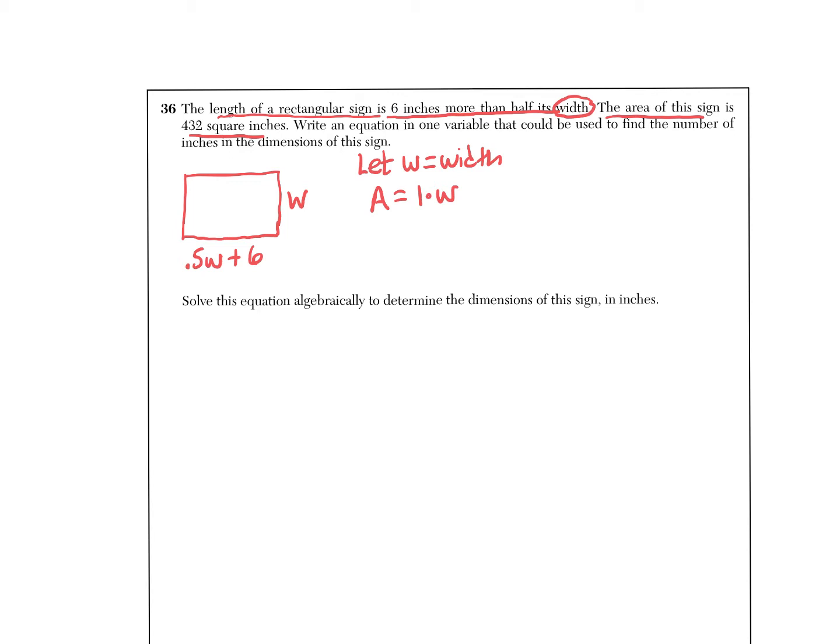We know the width and the length and the area, so I'm going to reverse the order just to make it convenient for me and I'll say w times 0.5w plus six is equal to that whole area of 432.